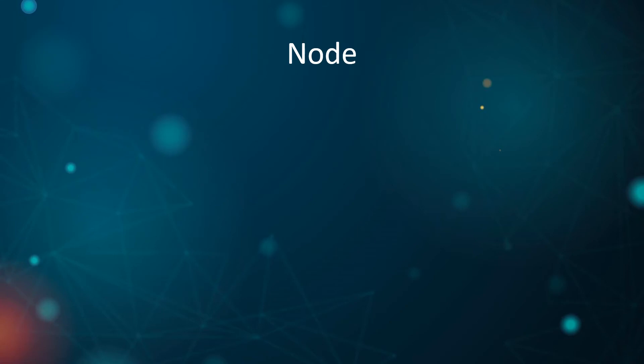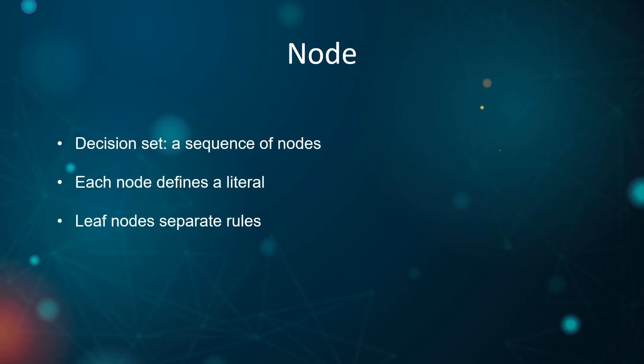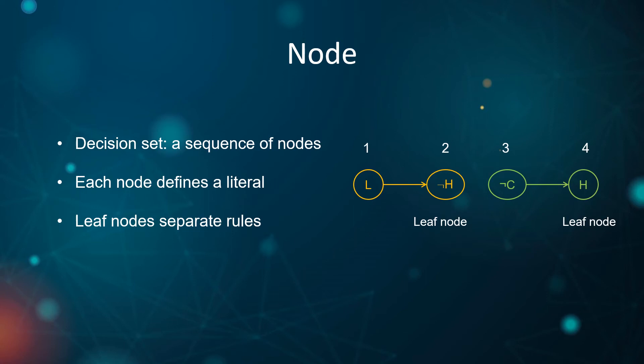Before presenting our encoding, we need to explain the concept of nodes. Nodes are important in our model. For simplicity, we assume a decision set to be a sequence of nodes, each defining a literal. Some nodes are marked as leaves — they separate the rules in the decision set. In the decision set example, there are four nodes and each of them represents a literal. Each leaf node is the end of the rule. Therefore, there are two rules in the example.